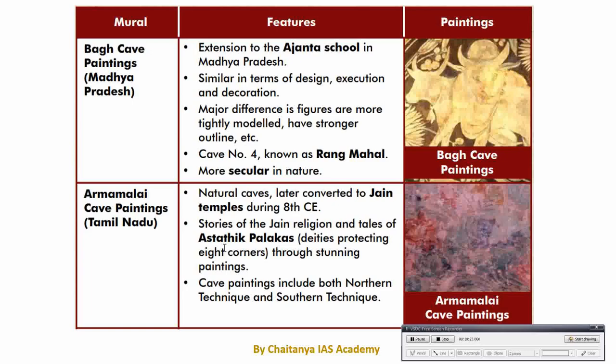The next important site is Bagh Cave painting, found in Madhya Pradesh. It is an extension of Ajanta style, similar in design, execution, and decoration of the Ajanta Cave painting, but it is secular in nature, belonging to only one religion. One unique feature is that the figures are more tightly modelled and a stronger outline is provided. The next site is Almas Malai Cave painting, found in Tamil Nadu, belonging to a Jaina temple. Here the story of Jaina religious tales has been drawn. This painting belongs to the 8th century, and both North Indian and South Indian style of painting has been found.